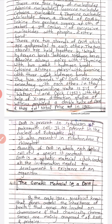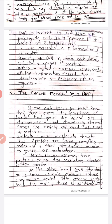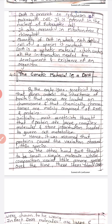Watson and Crick got the Nobel Prize in 1962. DNA is present in the cytoplasm of prokaryotic cells, which have no nucleus. It is present in the nucleus of eukaryotic cells. It is also present in mitochondria and chloroplasts. The quantity of DNA in each diploid cell of a species is constant.